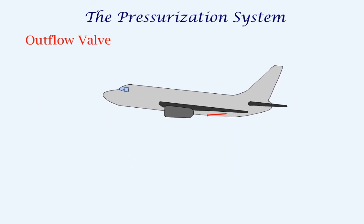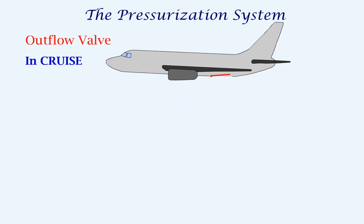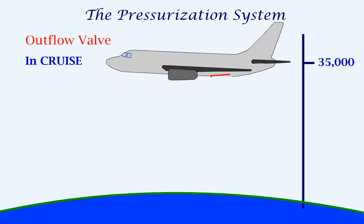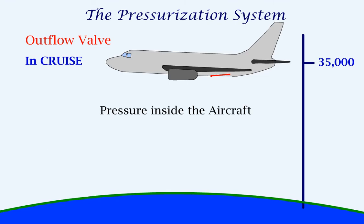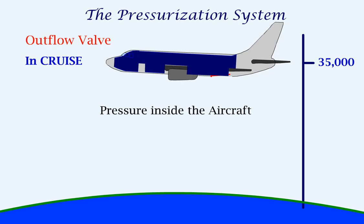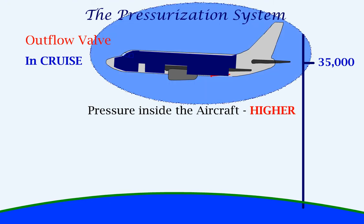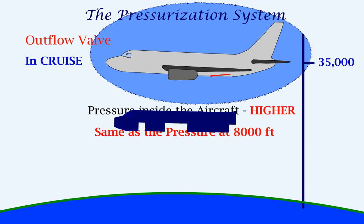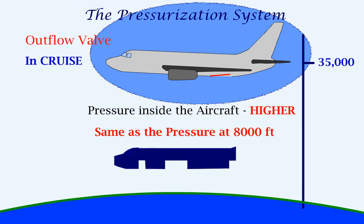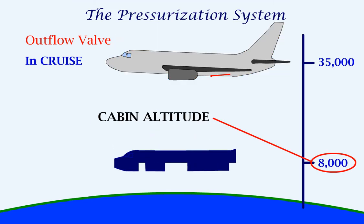The aircraft spends most of its flying time in the cruise phase. If the aircraft is cruising at 35,000 feet, high pressure has to be maintained inside the aircraft by adjusting the outflow valve. More specifically, the pressurized sections of the aircraft will be maintained at a much higher pressure compared to the ambient pressure. The pressure in the pressurized sections will be the same as the pressure we would feel at 8,000 feet. This 8,000 feet is called the cabin altitude.